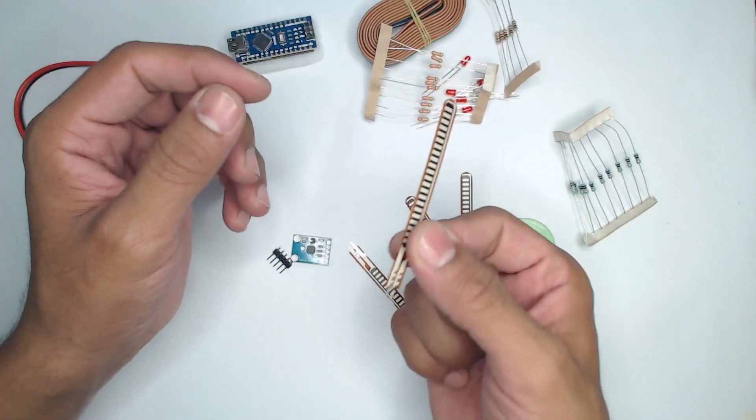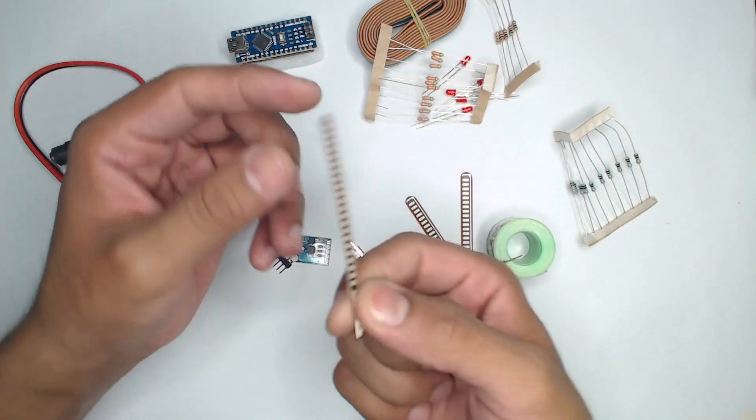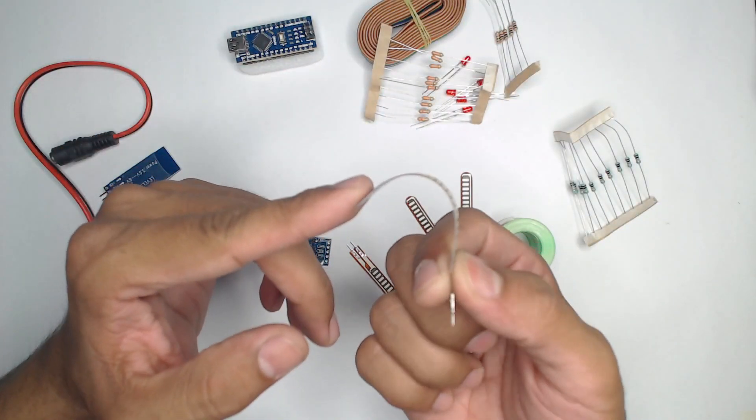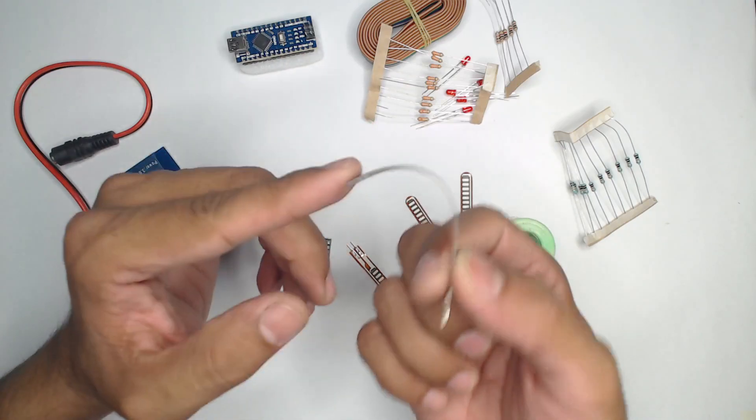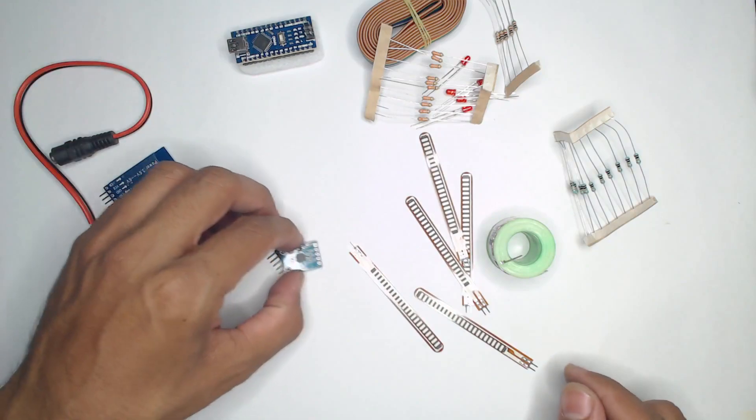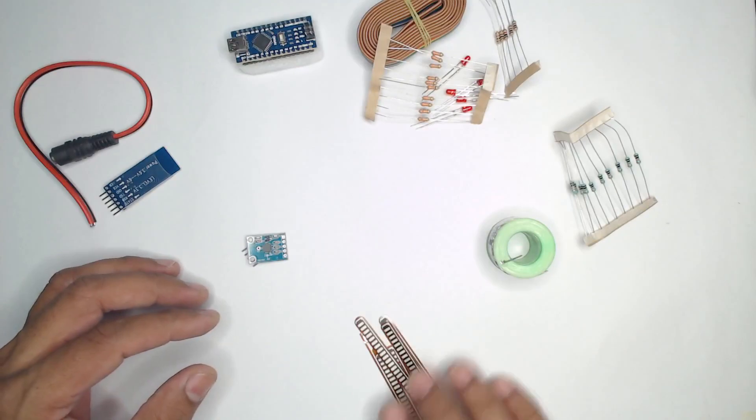Before heading towards the actual connections, it is very important to first of all get a flex sensor, measure the steady state values, and then also measure what value it reads when you actually bend. Along with this, we may interface either three or four depending upon the requirement.